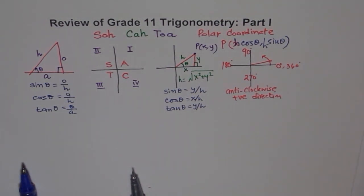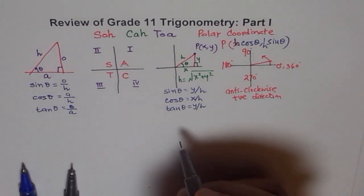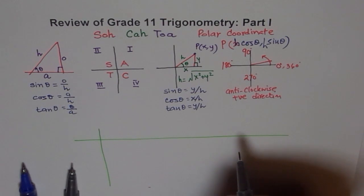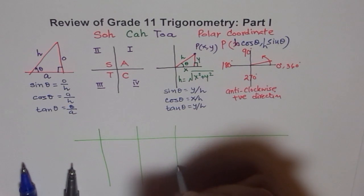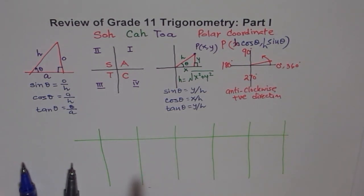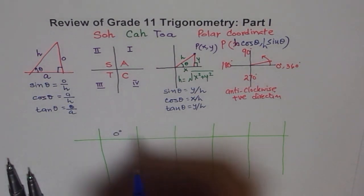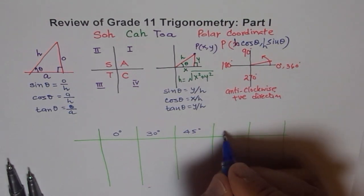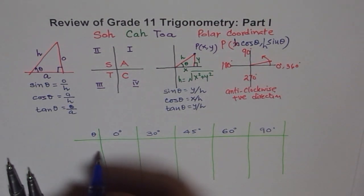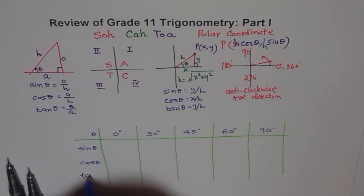We also learned some important special triangles. Let's use them to build a table of values for 0°, 30°, 45°, 60°, and 90°. For each of these angles, we'll find the values of sin θ, cos θ, and tan θ.